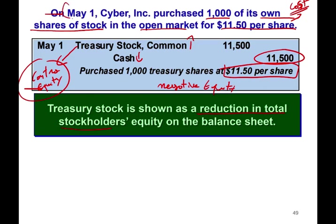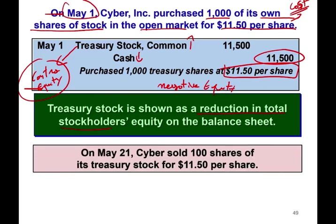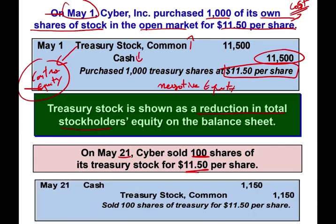On May 21st, 20 days later, we sold 100 of those shares at exactly $11.50 — the same price we purchased them. We debit cash $1,150 and credit treasury stock $1,150. We had 1,000 shares purchased and resold 100, leaving 900 shares still in treasury.